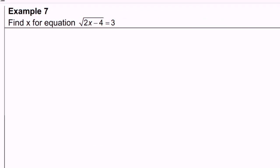Now, we are going to discuss example 7. Find the value of x for equation, square root of 2x minus 4 equals to 3.